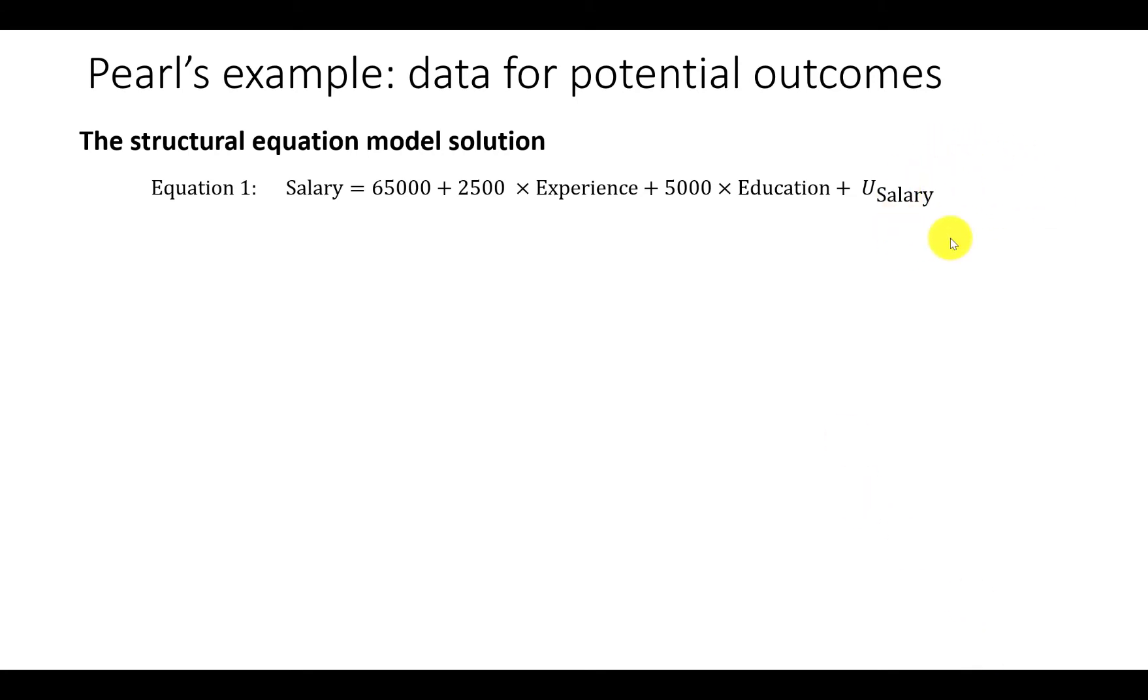Because experience is conditioned on education and the exogenous variable for experience, we also need an equation or expression for experience in terms of those. The equation here says that the average experience for people with no degrees is 10 years and each degree of education decreases experience by four years on average.